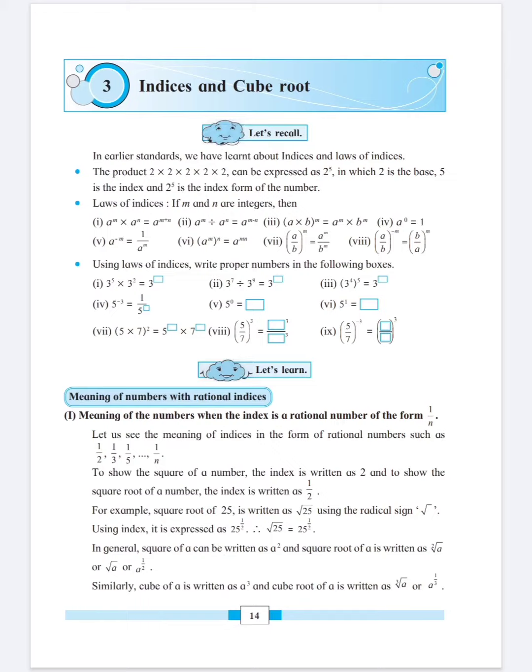In the previous class, we have studied how to read and write a number whose index or a power is in the form of 1 upon n or m upon n. Either it can be 1 upon 2, 1 upon 8 and so on. So, that form is called as 1 upon n.